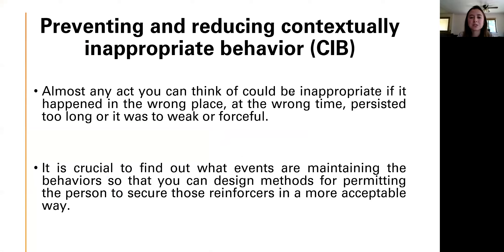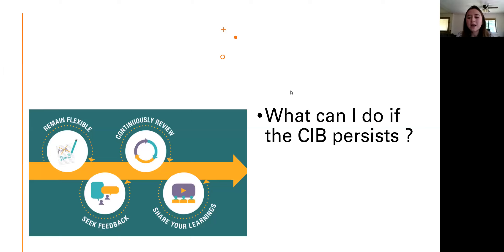Preventing and reducing contextually inappropriate behavior: almost any act could be inappropriate if it happened in the wrong place, at the wrong time, persisted too long, or was too intense. It is crucial to find out what events are maintaining the behaviors so that you can design methods for permitting the person to secure those reinforcers in appropriate ways. If the inappropriate behavior persists, we evaluate the base elements of the pyramid — asking ourselves if the activity is meaningful, if the materials are related and interesting, and if the strategies we are applying are the correct ones.